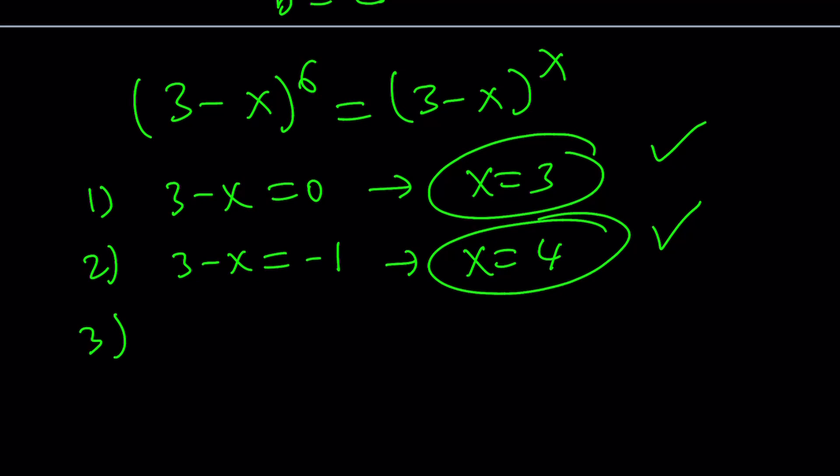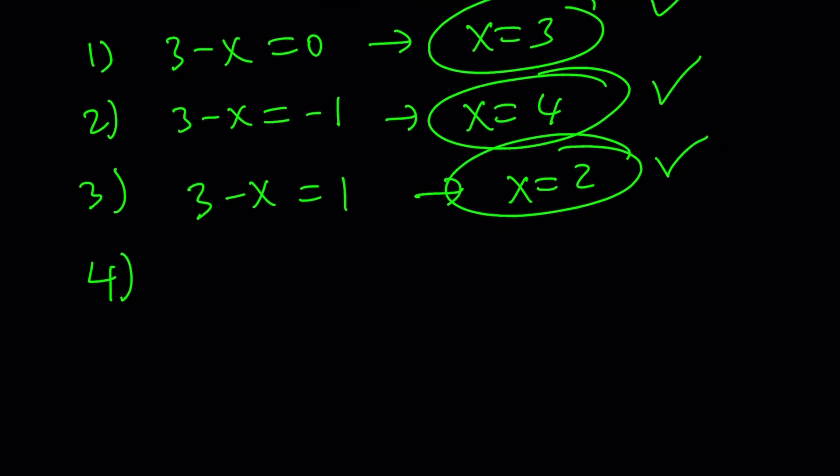Number 3. I haven't checked the first one, but you can plug it in, and you're going to see 0 equals 0. Okay. We checked it already. The third one is 3 minus x equals 1, and this means x equals 2. It's always going to check because we don't have to worry about any restrictions.